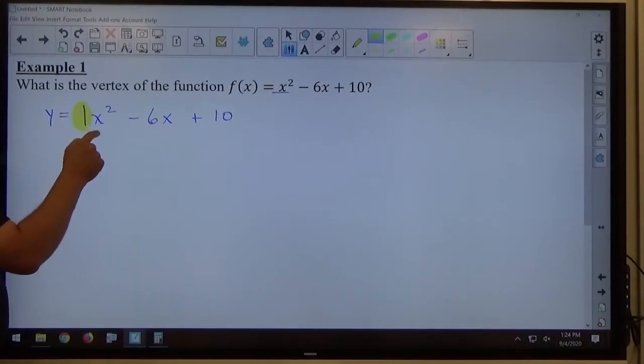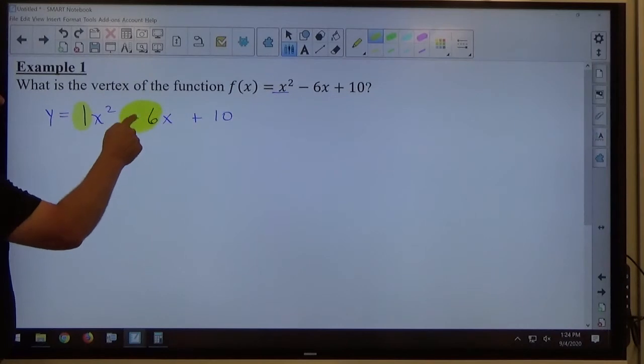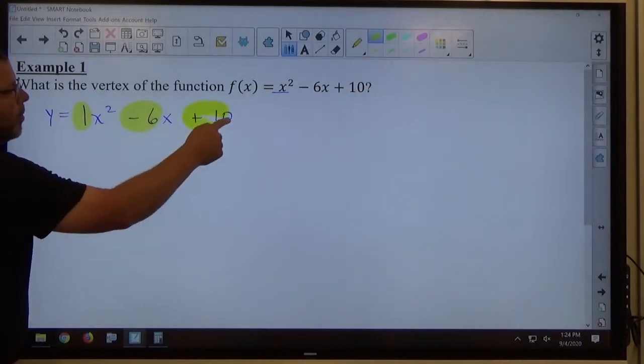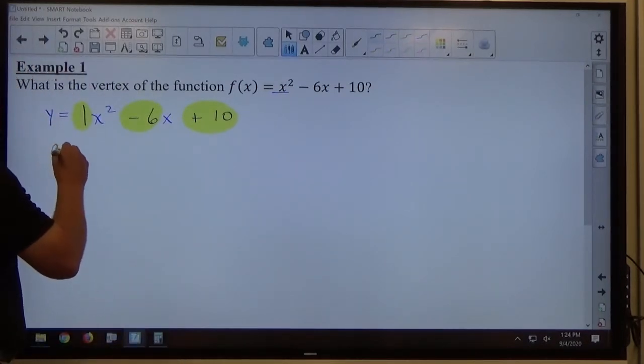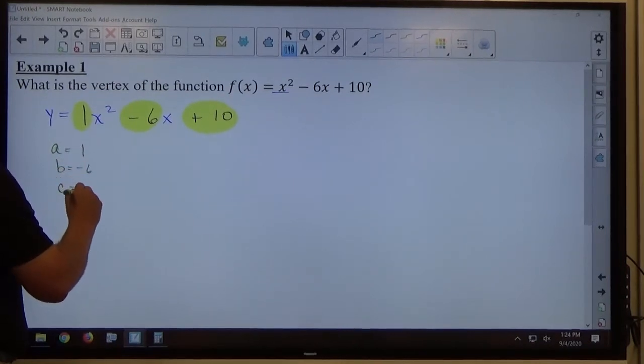And then I've got minus 6x and I've got plus 10. It's very, very important when we're doing quadratic functions for right now, when you're first learning how to do them, that you can see those numbers. The number in front of x squared is a. The number in front of x is b. And the number all by itself is c. The sign is part of the number. So, looking at this picture, a is equal to positive 1, b is equal to negative 6, and c is equal to positive 10.